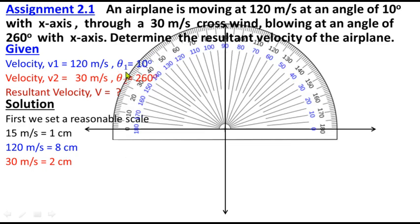First, we have to draw the vector which is at a 10 degree angle. Then we draw a line which is how much? 120 meters per second is 8 centimeters. We draw it.